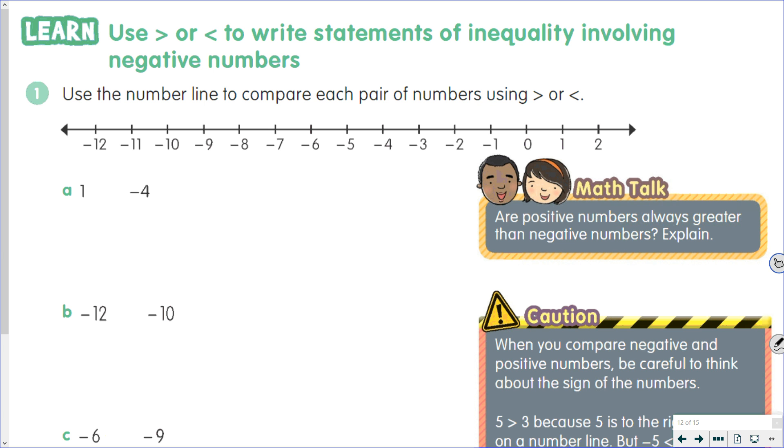If we look at part A, where we have 1 compared to negative 4, we see that 1 is farther to the right on our number line, so 1 is greater than negative 4. Another way to think about this: 1 is a positive number, negative 4 is a negative number, and a positive number is always greater than a negative number.